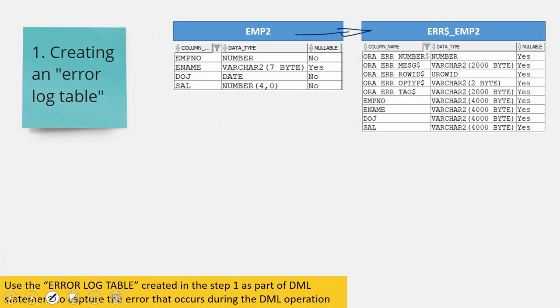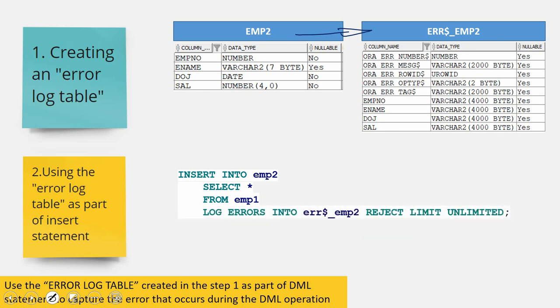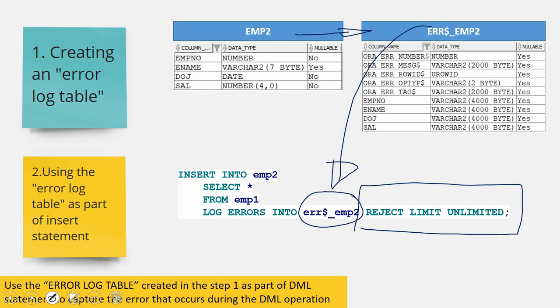The second step is to use this error log table as part of your DML statement. In the insert statement, after the SELECT clause, you add an extra clause: LOG ERRORS INTO the_error_log_table followed by REJECT LIMIT UNLIMITED. When you specify REJECT LIMIT UNLIMITED, any number of errors will be captured into the error log table. Whenever a record fails, its error information is captured in the error log table and Oracle continues with the rest of the records — it does not throw the exception to the caller.